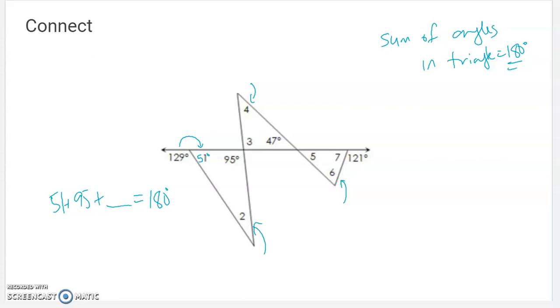And then same thing up here, since we know that, we know this angle is vertical to 95, we know this angle is 95. And then we could use that to find the missing angle of a triangle, because we would know that 95 plus 47 plus whatever 4 was would add up to 180, because they're a triangle. So yesterday we learned the inside angles of a triangle always add up to 180, and we could solve problems like that.